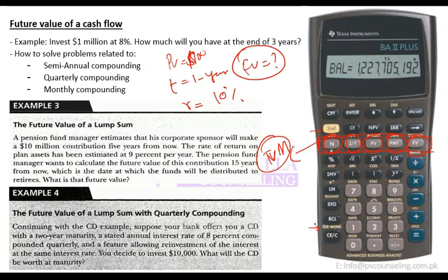After pressing 2nd and CLR Work, you start entering values. Remember: in a financial calculator, you first press the number, so type 1 and when you see 1 on screen, then press N. When you press N, the number 1 gets stored into N. Do not press N first and then the number — if you do that it will go wrong.